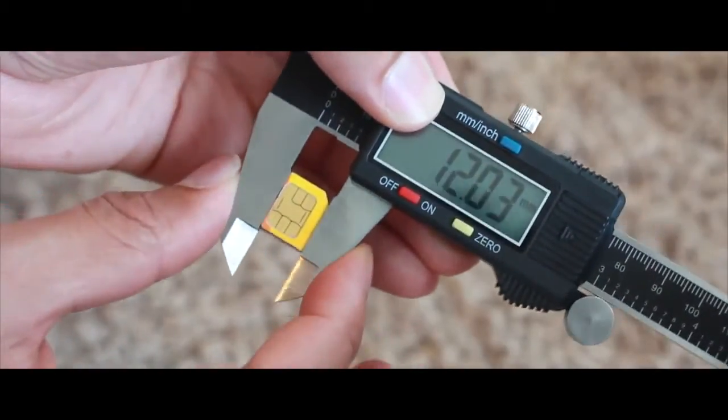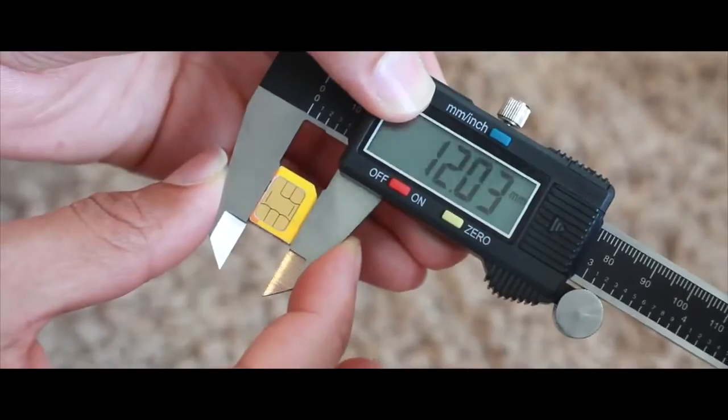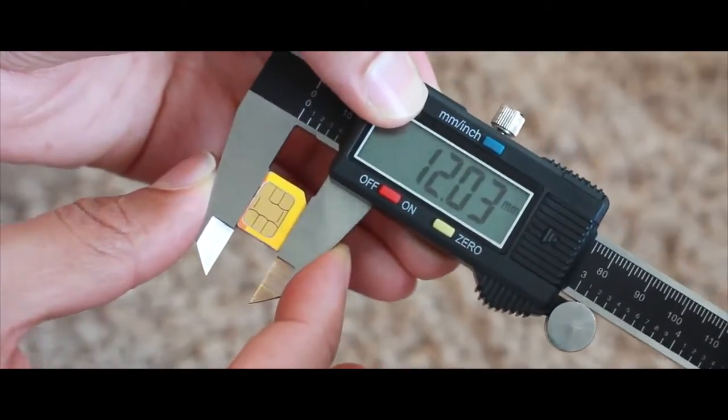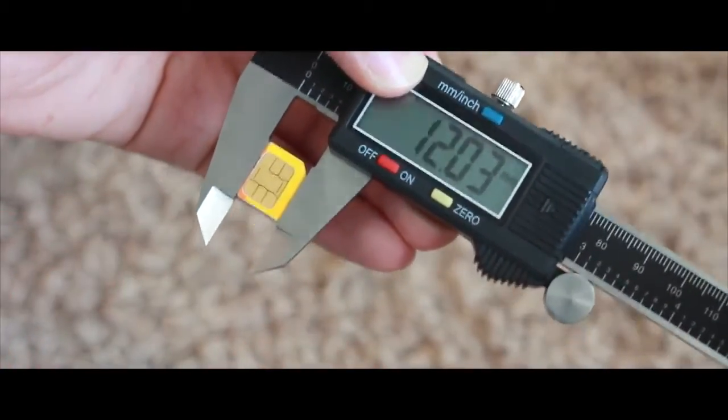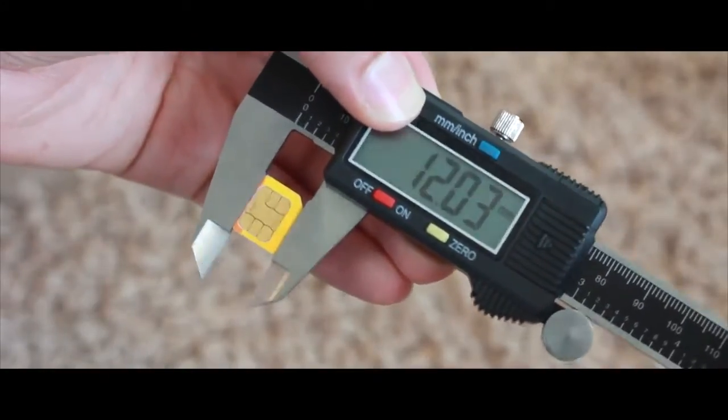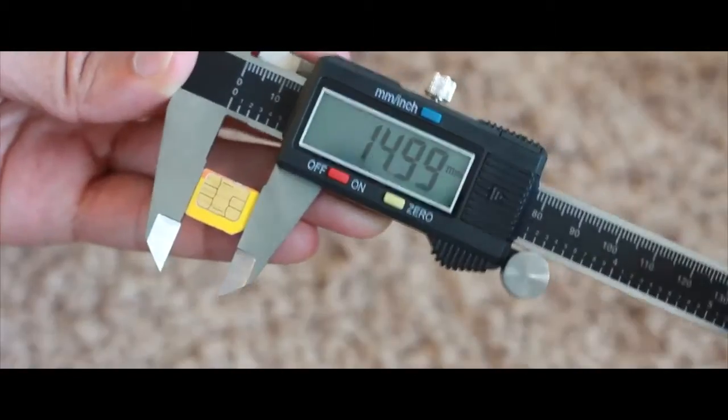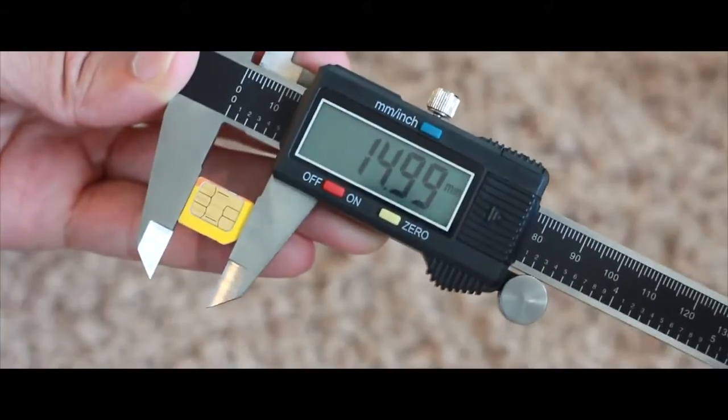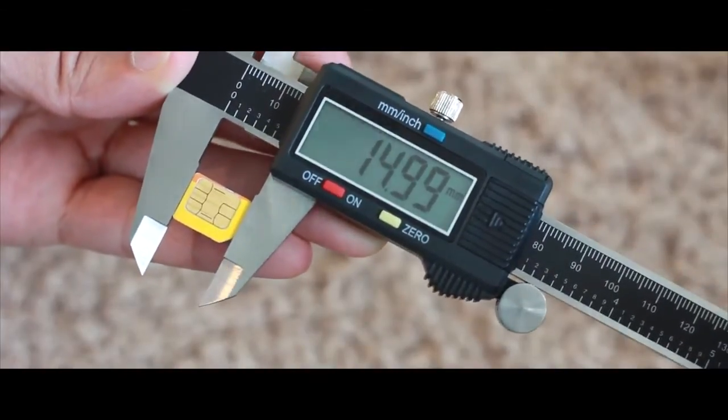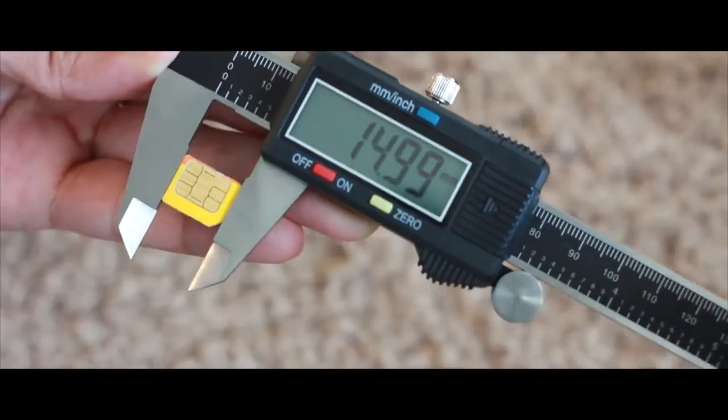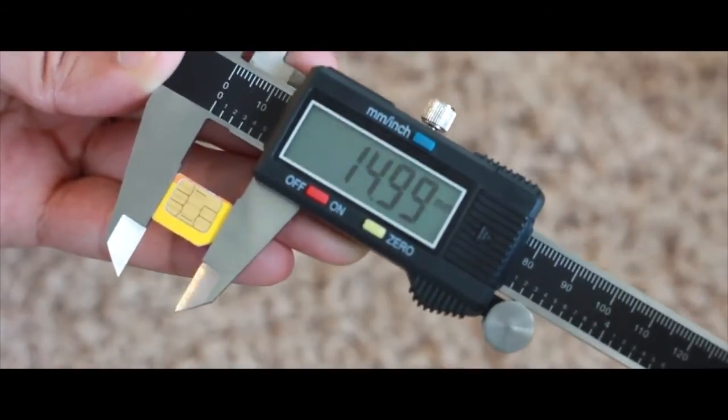Now let's measure the height of the micro SIM. It's about 12.03 millimeters as you can see here. And here is the width: it comes in at about 14.99 or 15 millimeters. That's a pretty exact reading for the width as well.